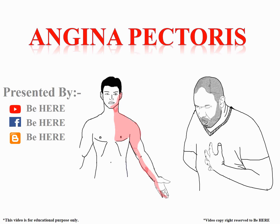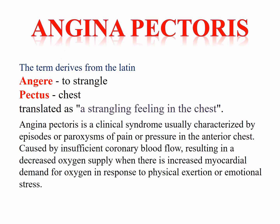In this video we will discuss types, clinical manifestation, diagnosis and management. The term angina pectoris is derived from the Latin words angeris and pectus — angeris means to strangle or squeezing of the neck, pectus means chest, and it is translated as strangling feeling in the chest. Angina is not a disease; it is a clinical syndrome characterized by pain or pressure in the chest caused by insufficient coronary blood flow to the heart, resulting in decreased oxygen supply to the cardiac muscles when there is increased myocardial demand of oxygen in response to physical exertion or emotional stress.